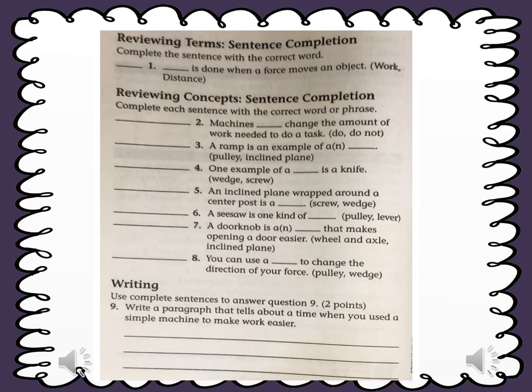Number 6. A seesaw is one kind of pulley or lever. Seesaw is an example of lever because it has a ramp that rests on its support.